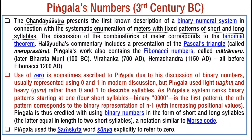Pingala's work also contains a very interesting phenomenon which talks about the number of ways in which you can form musical notes of length n using long and short symbols. The statement says that the number of ways in which you can form a musical note of length n equals the number of ways of length n minus 1 followed by a short symbol, plus the number of ways of length n minus 2 followed by a long symbol.